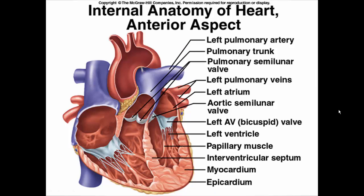The internal anatomy of the heart — concentrating on the left side — includes the left ventricle, left atrium, and the valves associated with the left side: the left AV (atrial ventricular) valve, also called the bicuspid or mitral valve. Also shown is the pulmonary semilunar valve, which prevents blood from flowing back from the pulmonary trunk into the ventricles, plus major vessels like the pulmonary trunk, pulmonary veins, and the aorta.